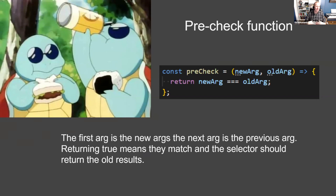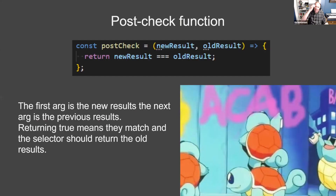We had a case where a new object was coming in but all the properties on the object could be the same. So we'd check the properties — if there's a mismatch on the properties, we run the function; if there's no mismatch, we just return the last computed result.